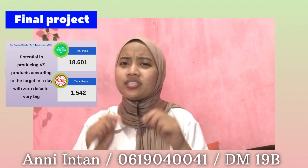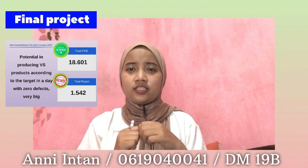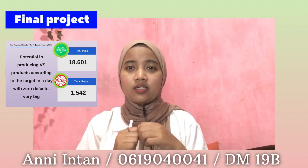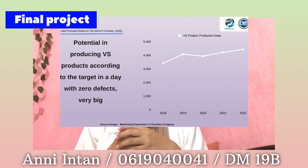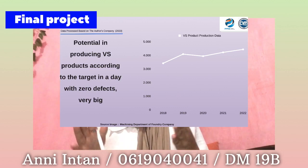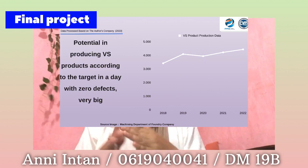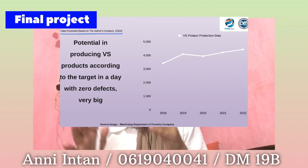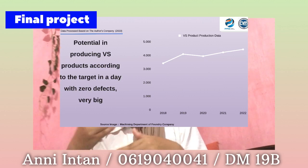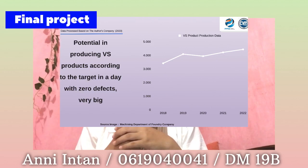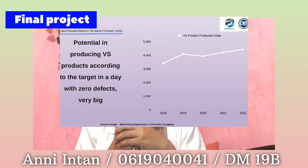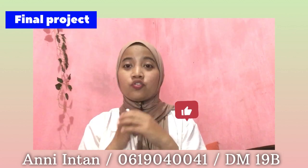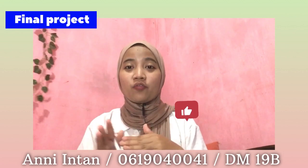The total production was 2,140 units and the defect products are blocking the value stream and blocking the road around the production area. This waste is identified as very dangerous and disadvantageous to the company. The VS product will become work-in-process inventory, further adding to inefficiency.